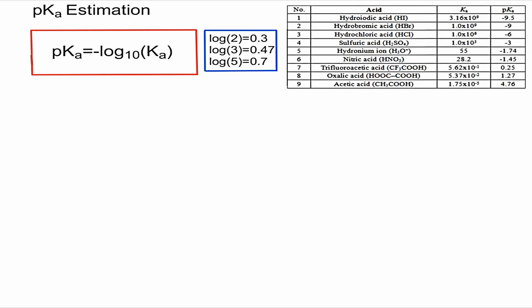Knowing the values of some basic logarithms will make this technique very simple. I've listed them here in blue - these are all logarithms of base 10. The logarithm base 10 of 2 is 0.3, of 3 is 0.47, and of 5 is 0.7. These are all approximated values.